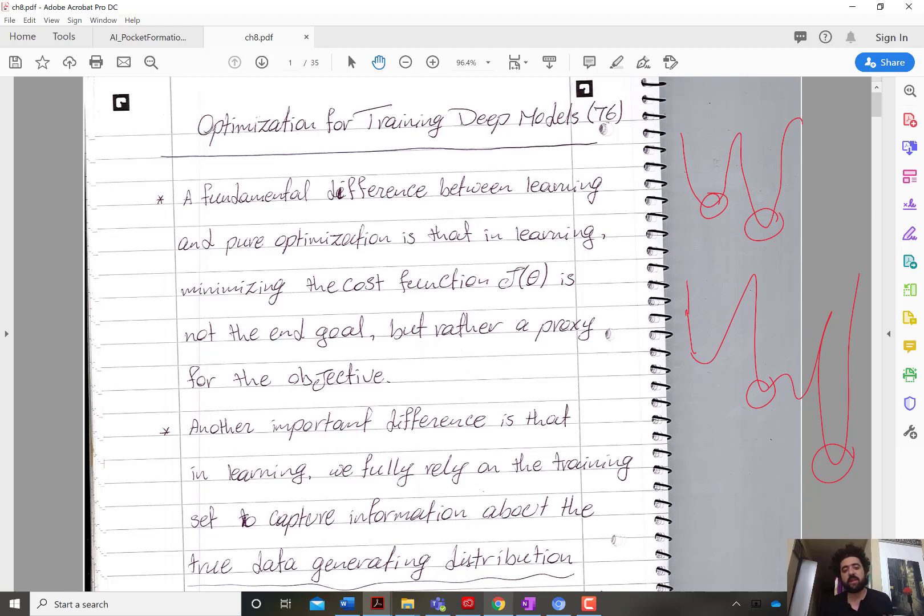But in machine learning it really is not that much of a problem if that local optima is close to the global optima. And the reason is that the cost function in optimization problems - that's the end goal, to find the optimal solution. But in machine learning the cost function is a proxy.